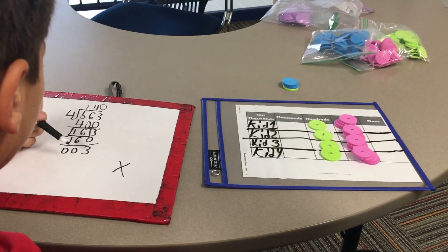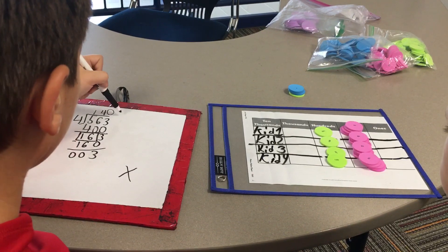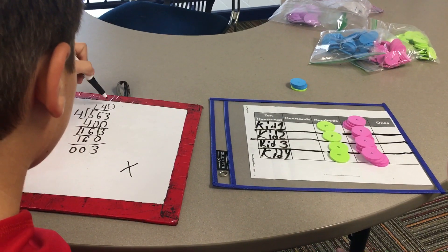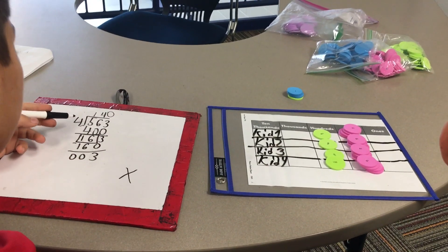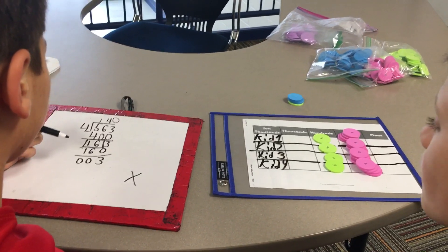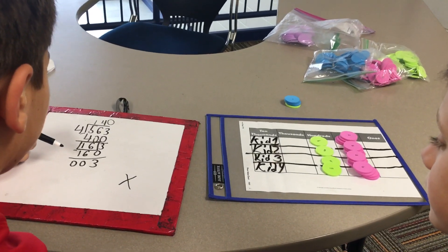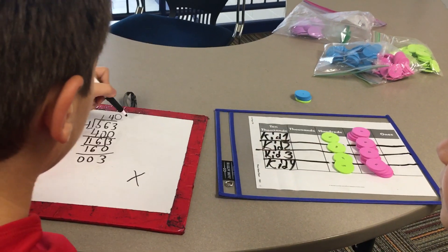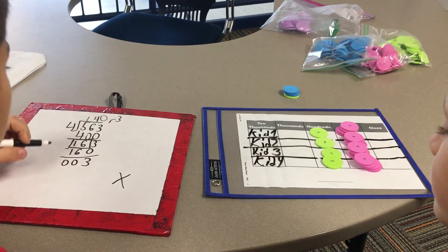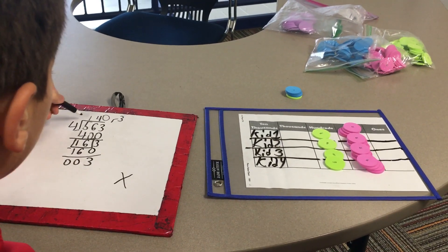Now I have 3 left over. All my places in the quotient have been filled, and my leftover amount is less than the divisor. This is how I know that 3 can be my remainder. So 563 divided by 4 is 140 remainder 3.